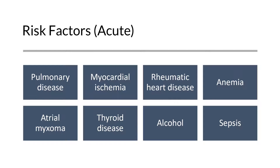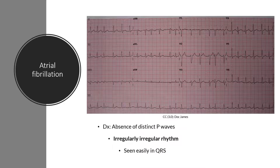There are several medical conditions that can tip patients off and essentially put them into acute atrial fibrillation. These include pulmonary disease, myocardial ischemia, rheumatic heart disease, anemia, atrial myxomas, thyroid disease including hyper- and hypothyroidism, alcoholism, as well as sepsis. This is something we can monitor for in hospitalized patients on telemetry in order to see if they are going into AFib, and recognizing this early is extremely important when it comes to managing these patients.